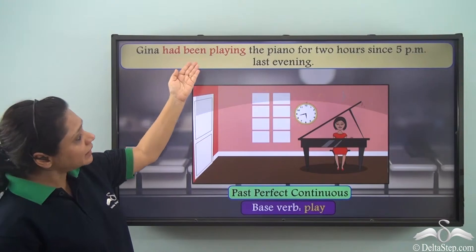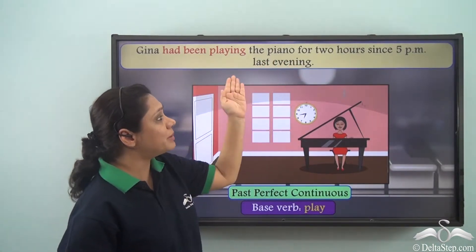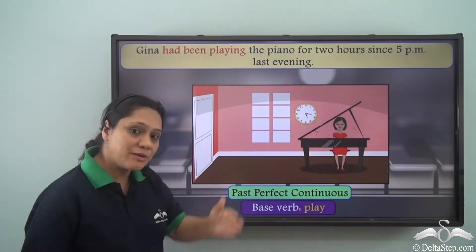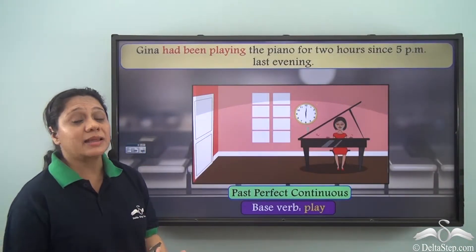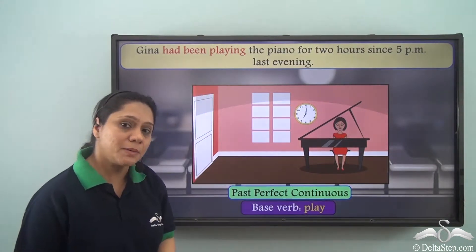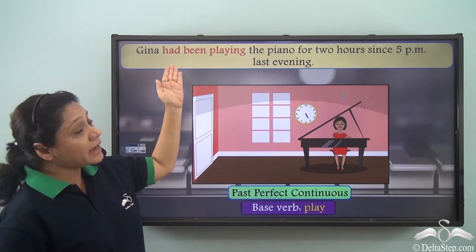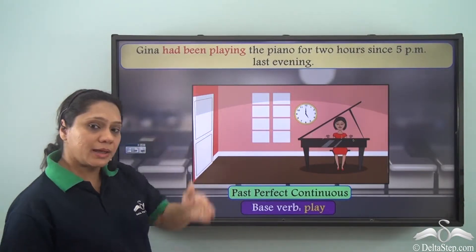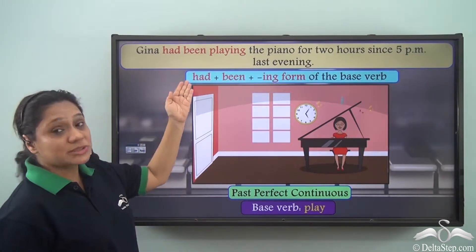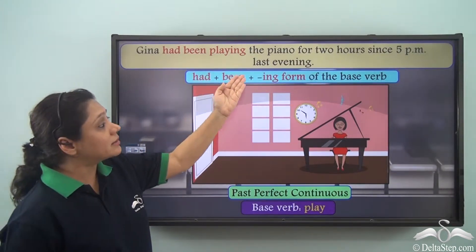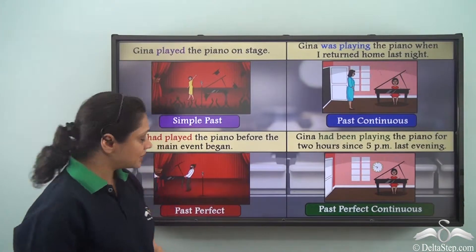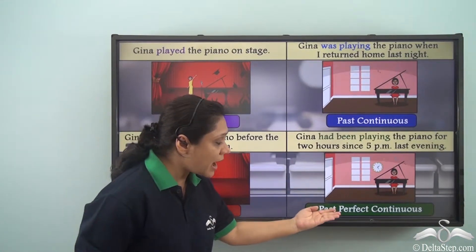'Gina had been playing the piano for two hours since 5 pm last evening.' Gina has been playing the piano from 5 o'clock for two hours, and at this point she has been continuously playing the piano. So 'had been playing' is in the past perfect continuous tense. The verb 'had been playing' is formed by using 'had' with 'been' and then the -ing form of the base verb. So we have four types of the past tense: the simple past, the past continuous, the past perfect, and the past perfect continuous.